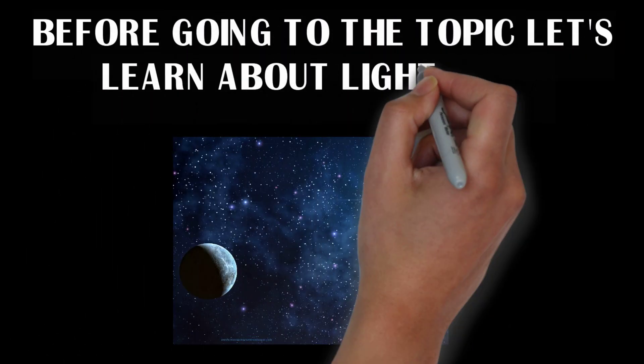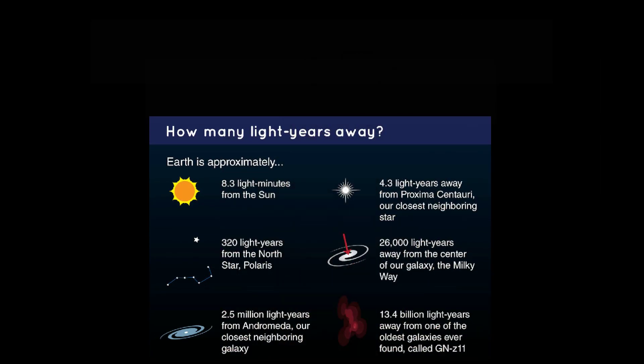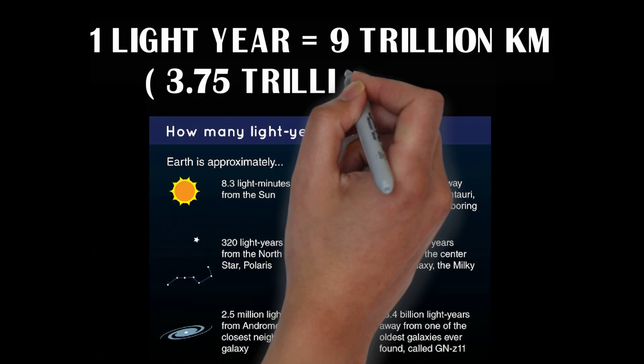Before going to the topic, let's learn about light speed. Light can travel at a speed of 3,000 km per second. Light year means a distance light can cover in a year. It is about 9 trillion kilometers.